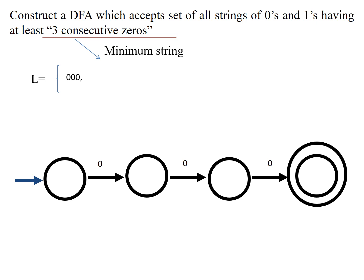The next possible string is '1000' — it has at least three consecutive zeros, and before them it can have any number of ones. Starting from the initial state, any number of ones at the beginning will still lead to acceptance. Another valid string is '0001': after reaching the accepting state via three zeros, if there is still a one in the input buffer, you must keep accepting — any number of ones at the end is also valid.